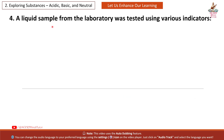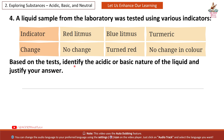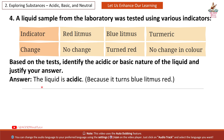Question 4: A liquid sample from the laboratory was tested using various indicators. Red litmus: no change. Blue litmus: turned red. Turmeric: no change in colour. Based on the test, identify the acidic or basic nature of the liquid and justify your answer. Answer: The liquid is acidic because it turns blue litmus red.